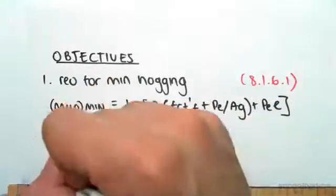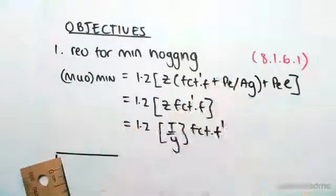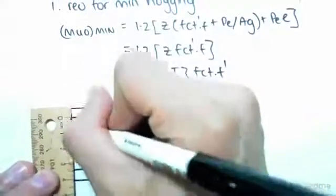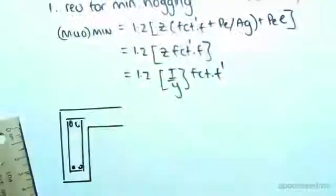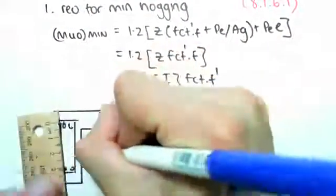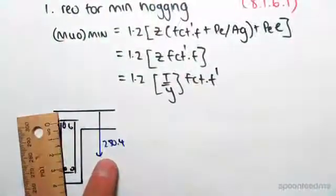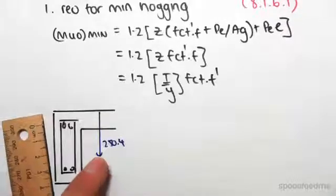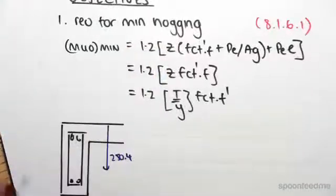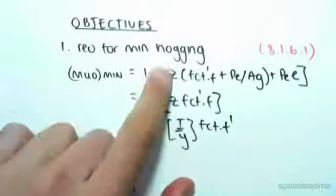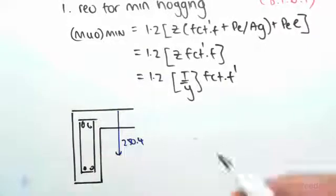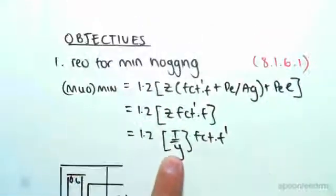I'll draw a picture to show what we're doing. Here is our beam — we've got stirrups and our bars, and the centroid from the top is at 250.4. The y distance is the distance from the centroid to the extreme fiber we're interested in. In the sagging case we looked at the bottom because the bottom was in tension, but now for hogging, the top of the beam is in tension. So we need the distance from the centroid to the top, which is 250.4.